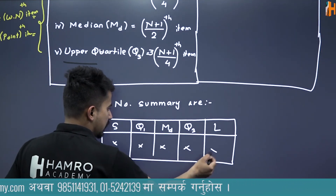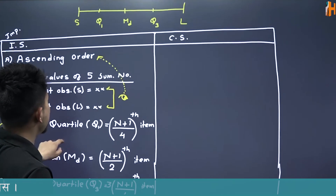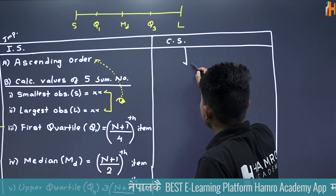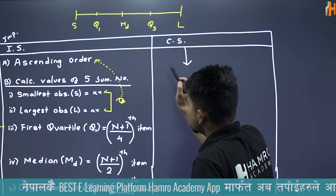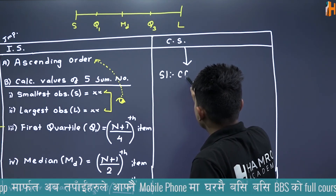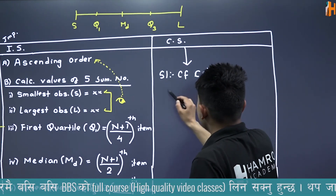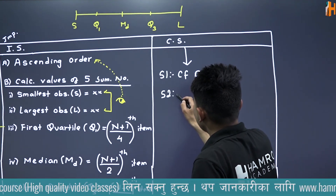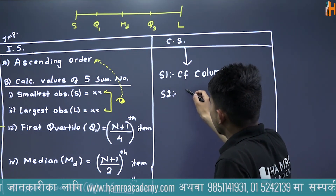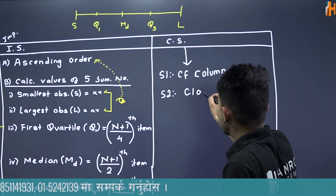Now we will continue with the continuous series. If we focus on continuous series, step number 1 is the CF column. Step number 2 follows. Let me know this note — how should I work for Q1 in the continuous series?